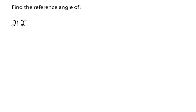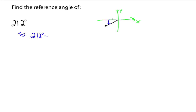Let's find the reference angle of 212 degrees. What quadrant is 212 degrees in? 180 is here, 270 is there, so 212 is somewhere in quadrant 3. The reference angle is the small angle between the terminal side and the x-axis. So we do 212 degrees minus 180 degrees, which gives us 32 degrees. The reference angle for 212 degrees is 32 degrees. When in quadrant 3, you take the full angle minus 180 to find what's left over.